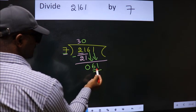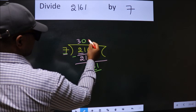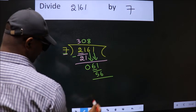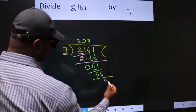A number close to 61 in the 7 table is 7 times 8, 56. Now we subtract. We get 5.